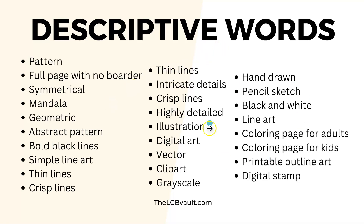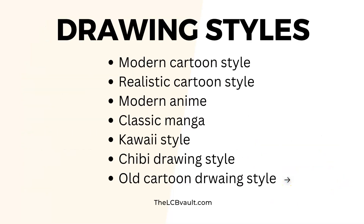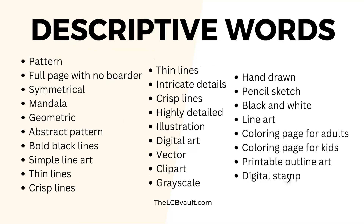These keywords are better for creating other types of coloring pages: thin lines, intricate details, crisp lines, highly detailed, illustration, digital art, vector, clip art, greyscale — that's a good one — hand-drawn, pencil sketch, black and white, line art, coloring page for adults, coloring page for kids, printable outlined art, and digital stamp. These drawing styles, combined with a description of what you want the coloring page to be and these descriptive words, allow you to create some truly unique coloring pages.